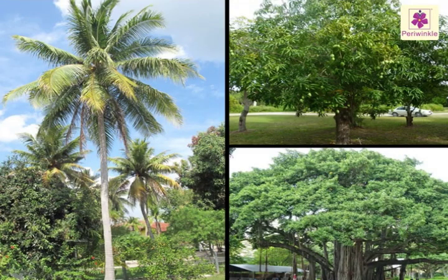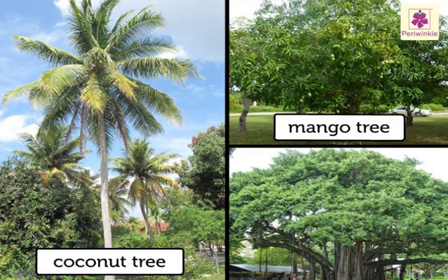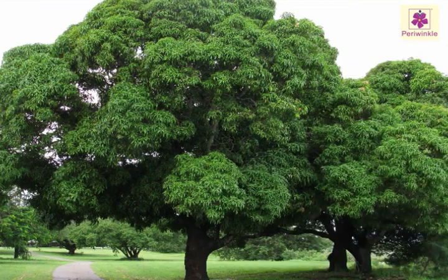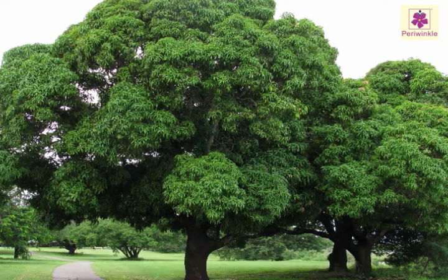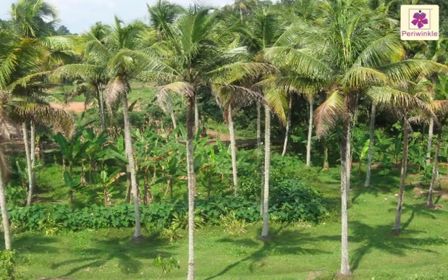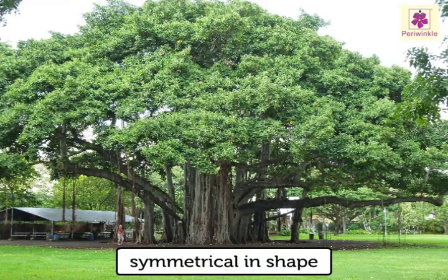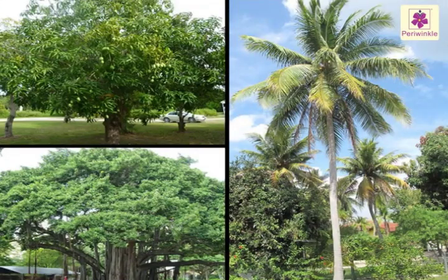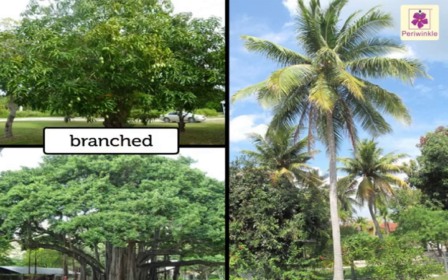According to shapes and sizes, trees are of different shapes and sizes. Look at the pictures of the coconut, mango, and banyan trees. The mango tree is a big, round tree with a dense top, while the coconut tree is tall. The banyan tree is symmetrical in shape. The trunks of both the mango and banyan trees are branched.